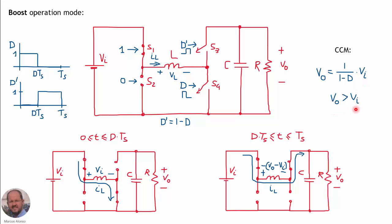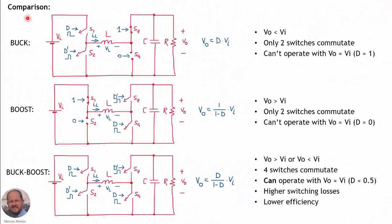This is a comparison among the different operating modes. In the buck converter, the output voltage is always lower than the input voltage. Only two switches commutate — S1 and S2 — so switching losses occur only in S1 and S2; S3 has only conduction losses and S4 has no losses since it's continuously open. However, if the input voltage and output voltage are very close, we need a duty cycle very close to 1, which is not possible, so the buck converter cannot be used when input and output voltages are very similar.